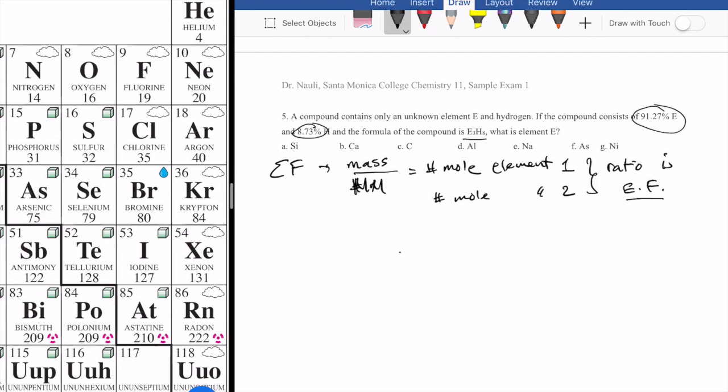And so the question is, you have to figure out somehow the molar mass, right? Because that's the missing component. If you know the molar mass, then you can find out what element you have there. So remember that we can always assume 100 grams of compound, which means we have 91.27 grams of E and 8.73 grams of hydrogen.